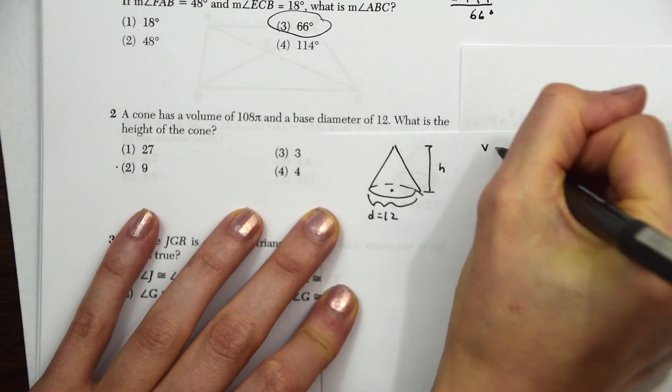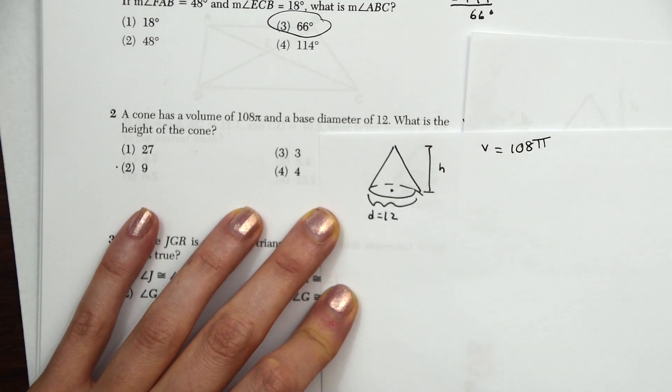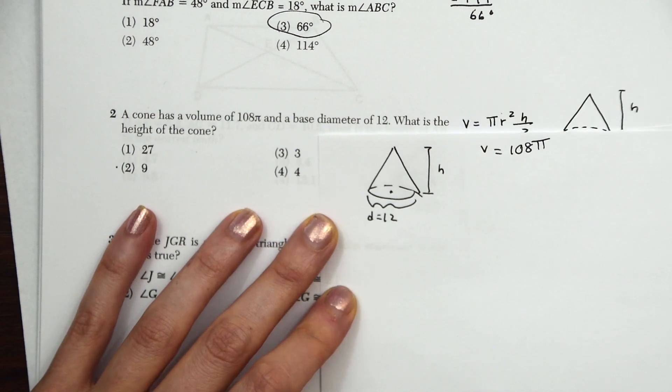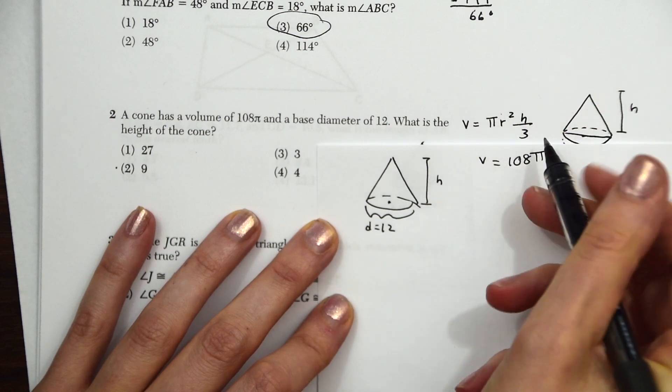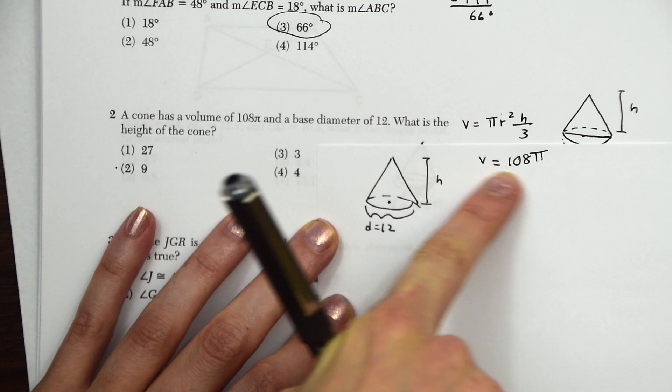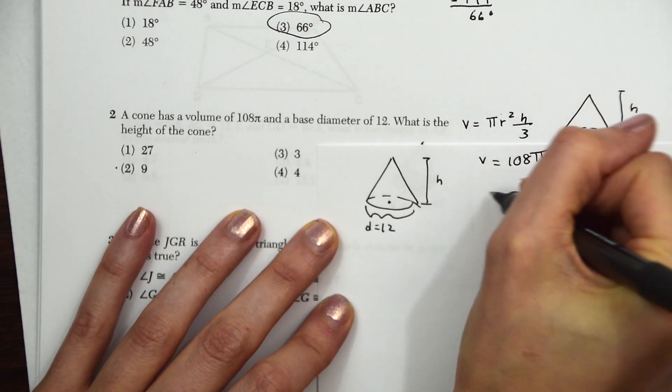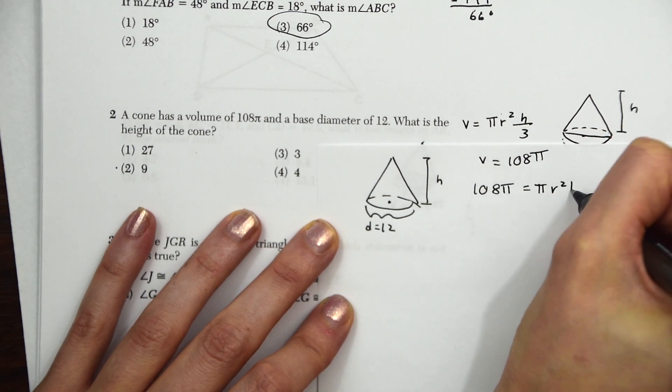But we know that the volume is equal to 108π. So just a reminder of what 108π, the volume, is equal to. So this is the formula. Volume is equal to πr²h over 3. So since we know the value of the volume, we can just set our equation equal to the value of the volume. So 108π equals πr²h over 3.